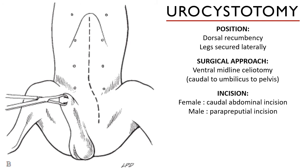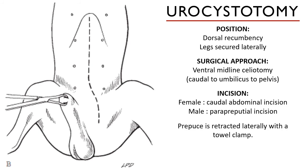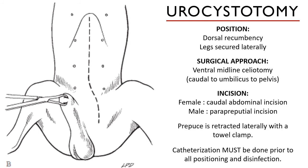In male dogs, the prepuce blocks the area directly ventral to the bladder. To fully access this area, the incision is made paraprepucially — beside the prepuce. The prepuce is then retracted and secured laterally with a towel clamp.